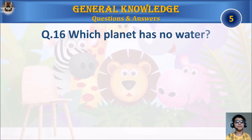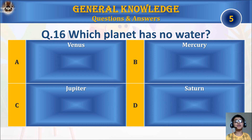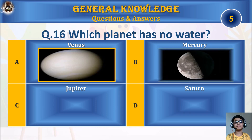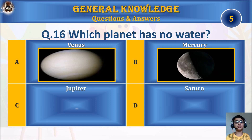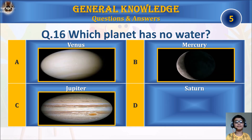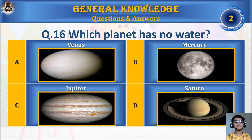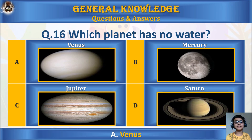Question 16: Which planet has no water? A. Venus, B. Mercury, C. Jupiter, or D. Saturn? Your time starts. The answer is A. Venus.